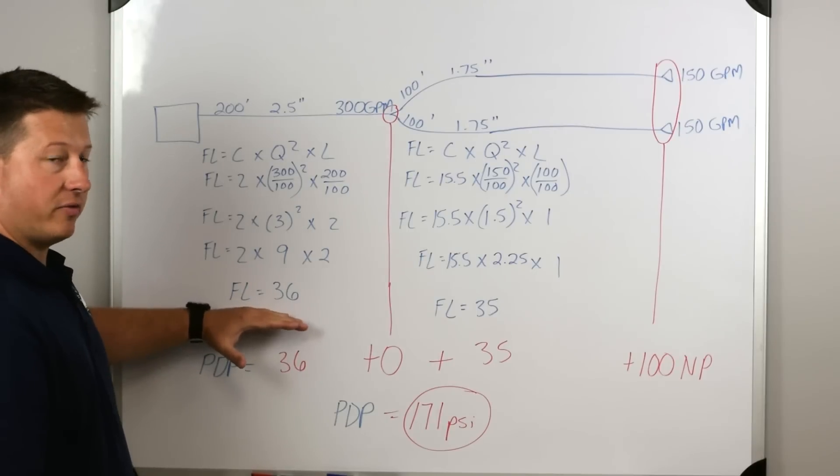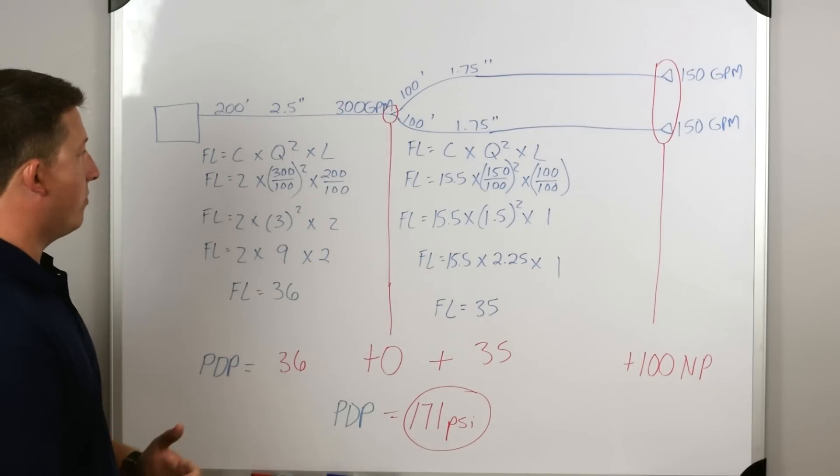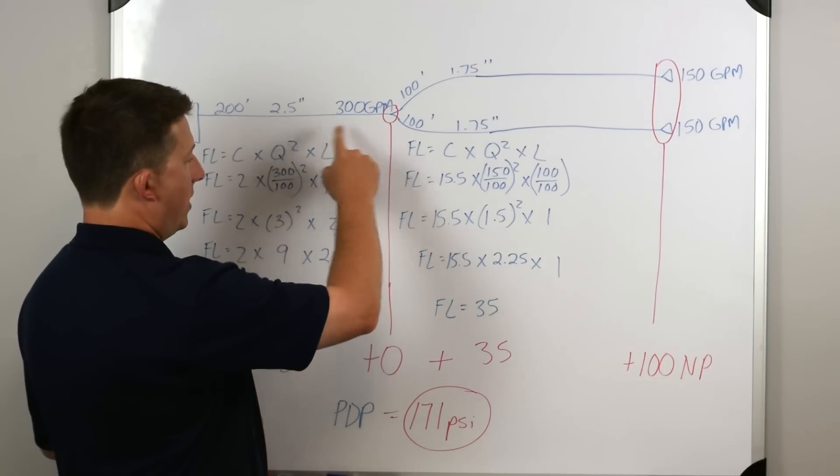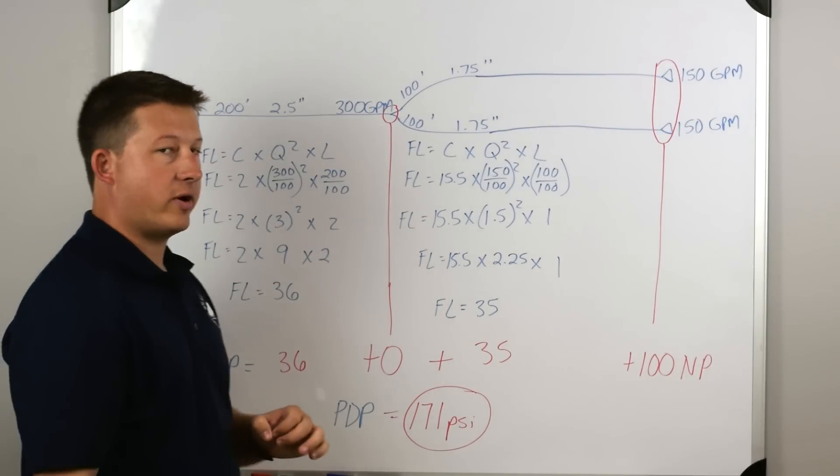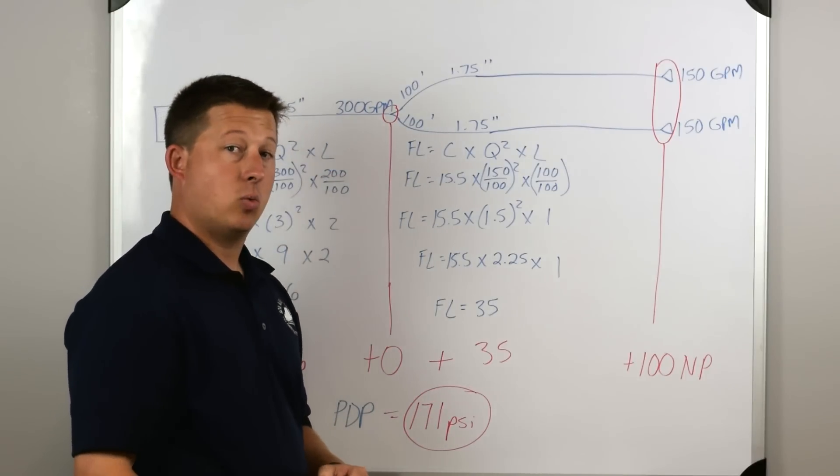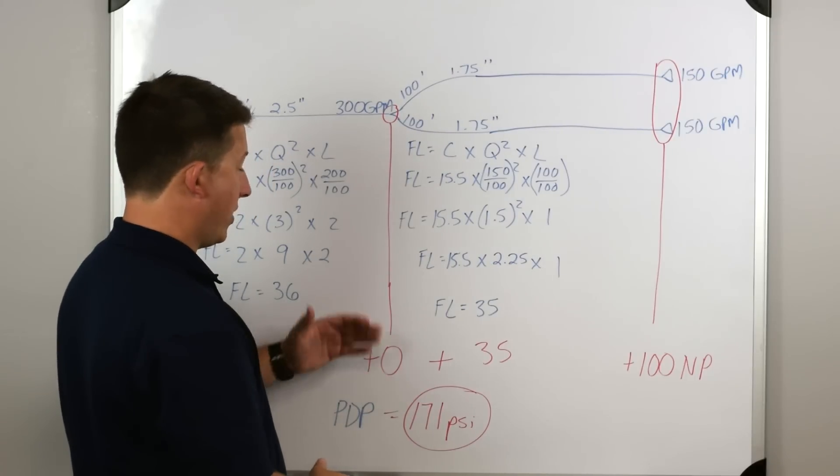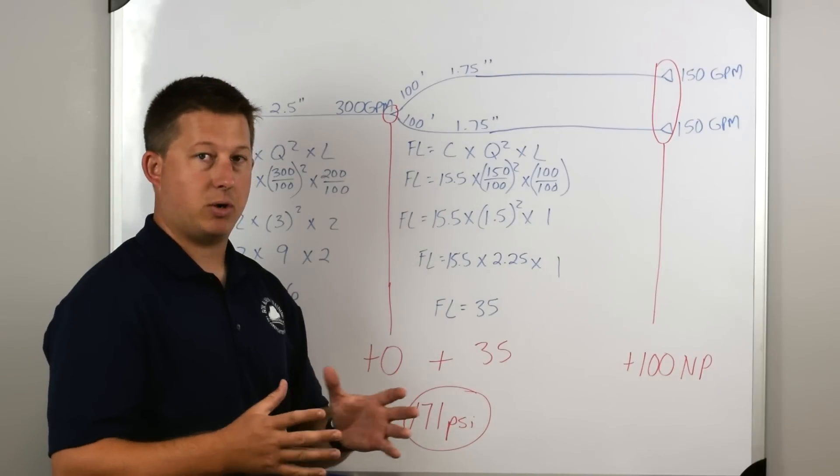And that answer is going to be the friction loss from here to the y is 36. So that's only one piece. We have the friction loss of 36 psi for this one piece of hose, the 200 foot long hose that's two and a half inches in diameter. The next thing we run across is the y. If we remember, any time that we flow over 350 gallons per minute, we need to add 10 psi of friction loss for that appliance.